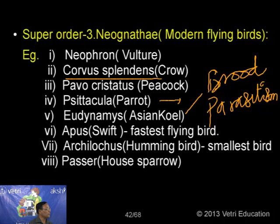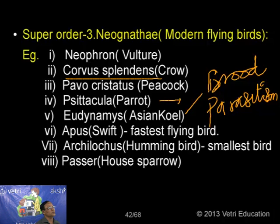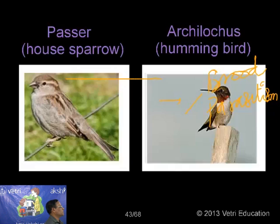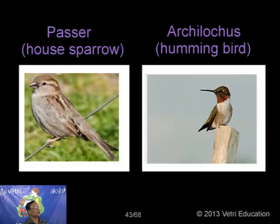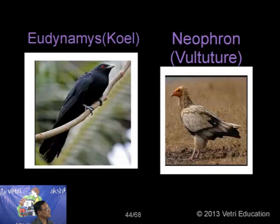Apus — the fastest flying bird, which we call swift in common language. Then the smallest bird — the hummingbird, Archilochus — the smallest living bird. And our house sparrow, Passer. These are some of the examples of modern flying birds coming under super order Neognathae. We have pictures of the house sparrow, Archilochus, and Eudynamis — the koel — an example for brood parasitism, laying its eggs in a crow's nest. Neophron — the vulture.